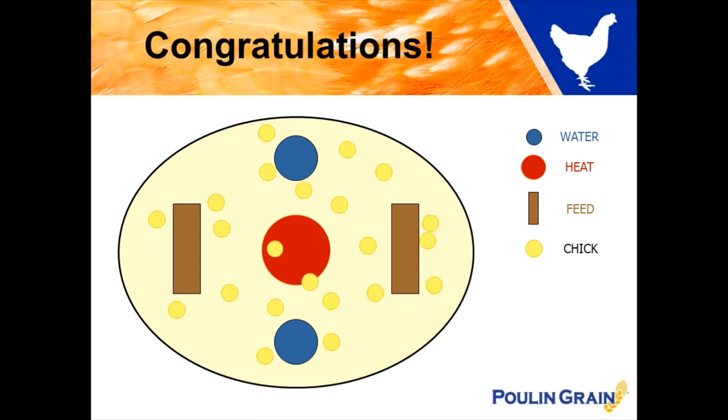And take a look at this. Congratulations. If your baby chicks are scattered evenly throughout your brooder space, some around the water, some around the feeder, and even some under the heat source, this is the perfect setup and they are very happy with the temperature of their surroundings.